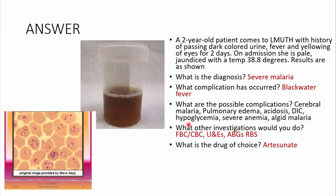For other investigations, do a complete blood count to detect derangements in white cells, platelets, and red blood cells. Do urea and electrolytes because acute kidney injury is a complication. Do arterial blood gases to pick up acidosis, and a random blood sugar to detect hypoglycemia. The treatment of choice is artesunate given intravenously.